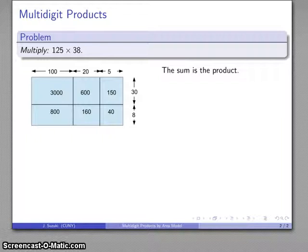And the sum is the product. So I'm going to add those together, 125 times 38. I'm going to add this way. This is 3,800, this is 760, this is 190. I'm going to now add these three together and get my final answer, 4,750.